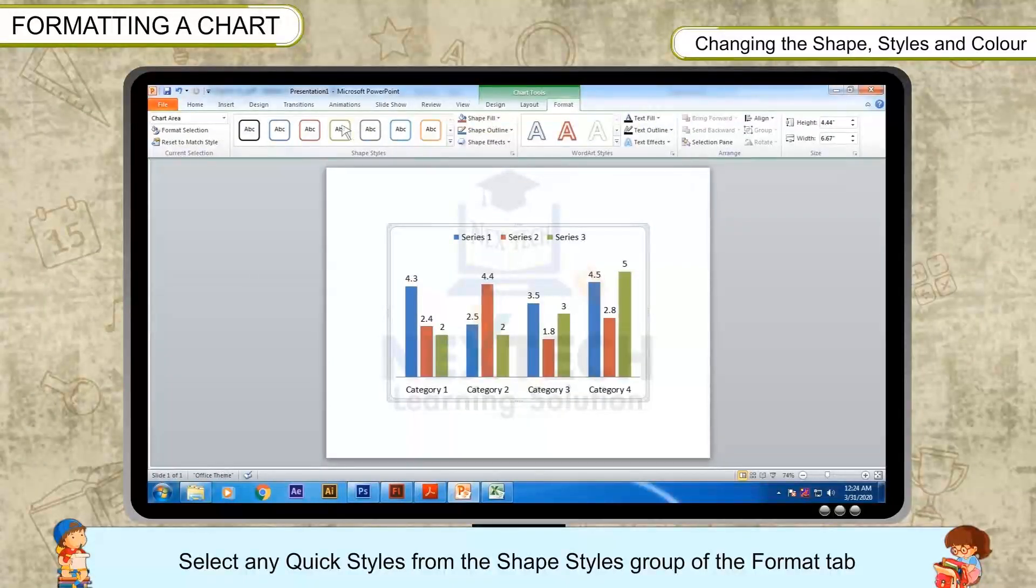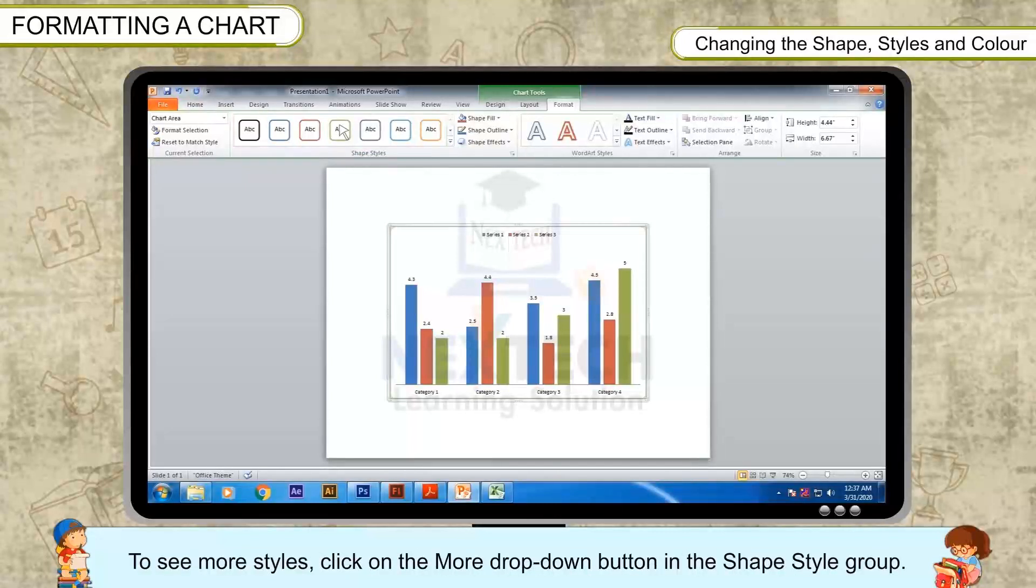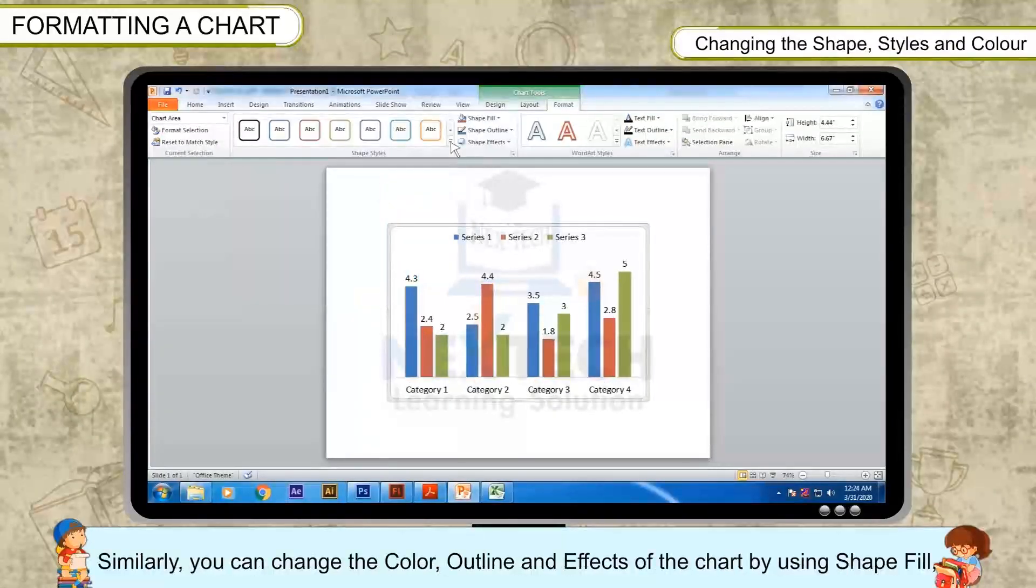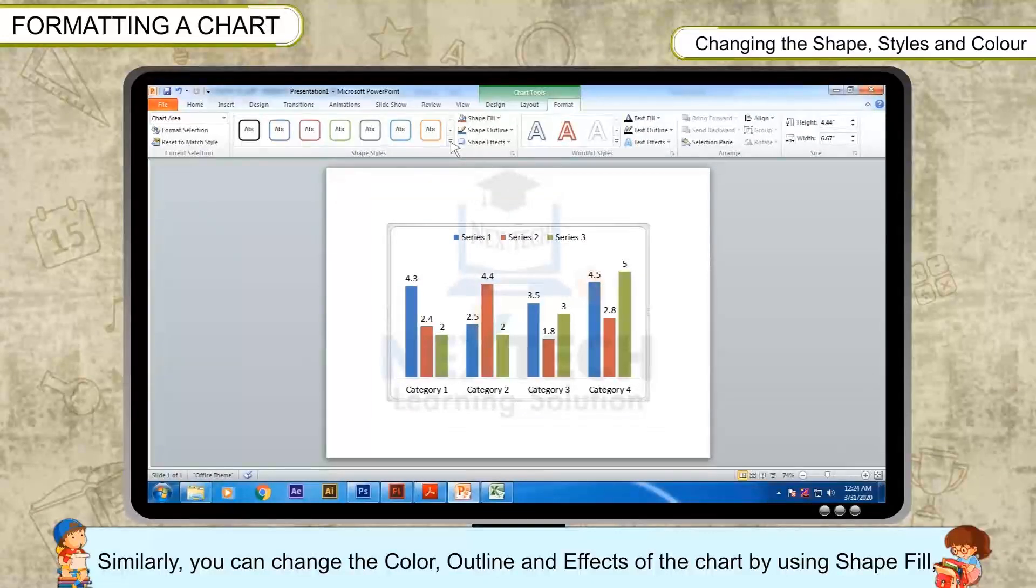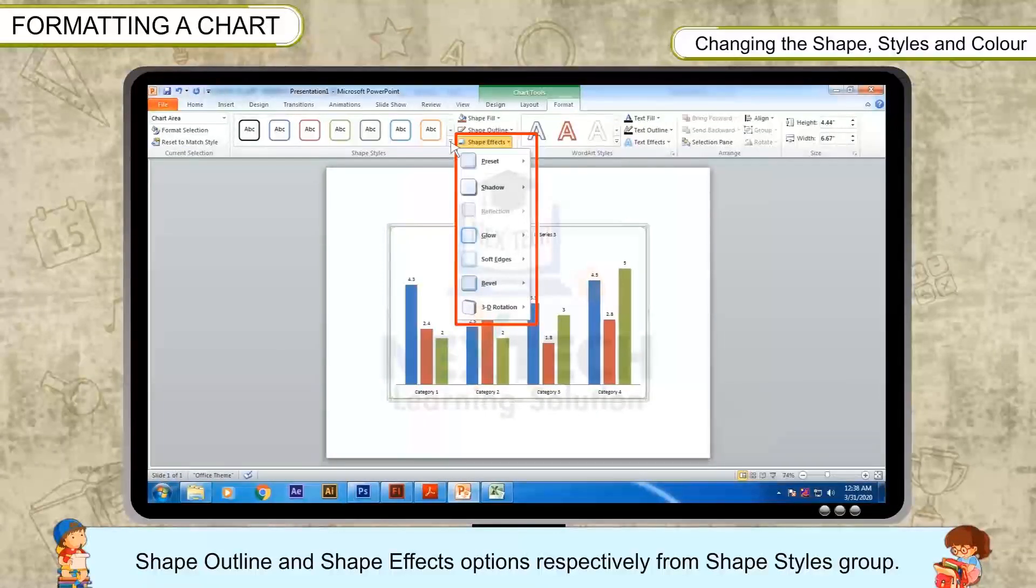Select any quick styles from the Shape Styles group of the Format tab. To see more styles, click on the More drop-down button in the Shape Style group. Similarly, you can change the color, outline, and effects of the chart by using Shape Fill, Shape Outline, and Shape Effects options respectively from the Shape Styles group.